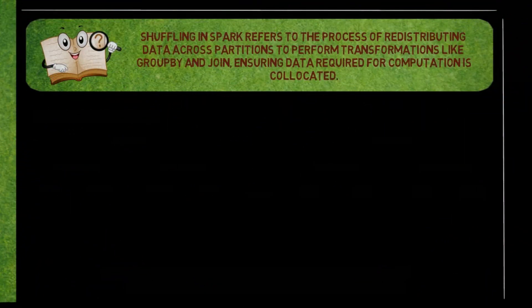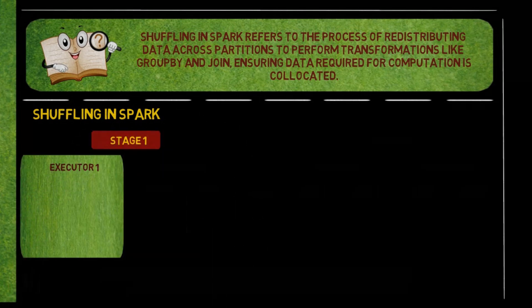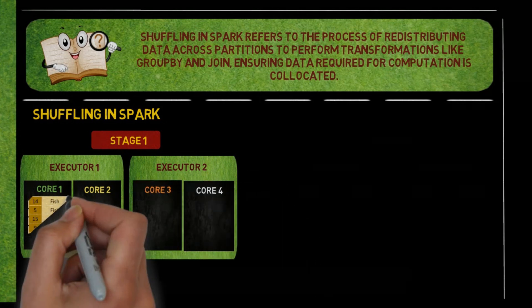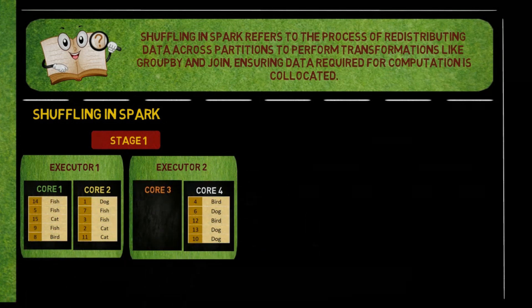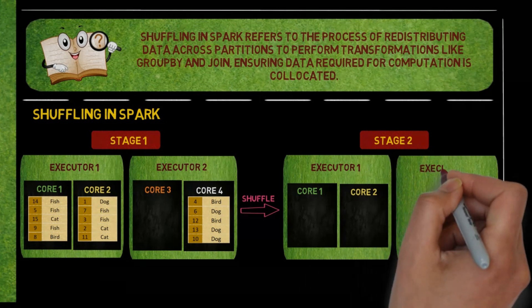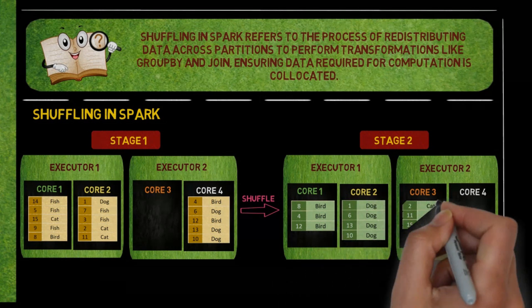Shuffling in Spark refers to the process of redistributing data across partitions to perform transformations like group by and join, ensuring data required for computation is collocated. Consider an example where pet data is divided into three partitions processed by two executors — one partition handled by a single core. When we perform a group by operation on the pet data, a shuffle is triggered, as the group by operation cannot be performed until all related data is brought under the same partition. This causes the data to be exchanged, forming four new partitions for the executors to process.